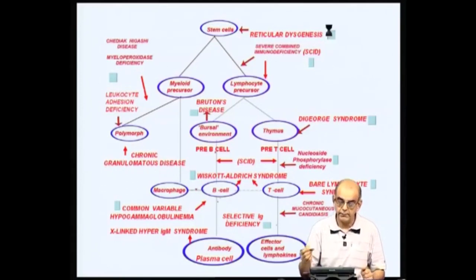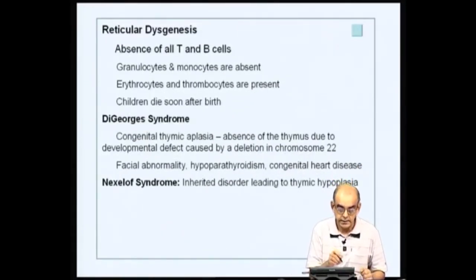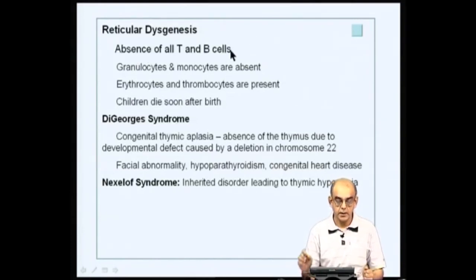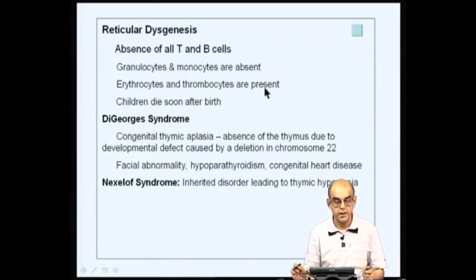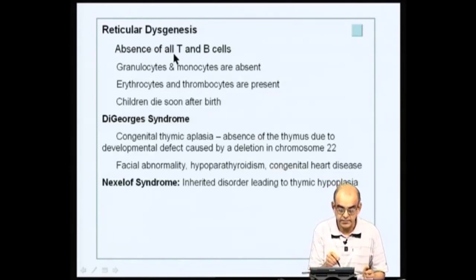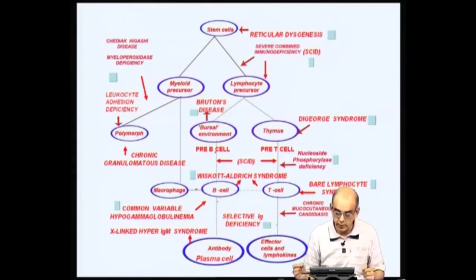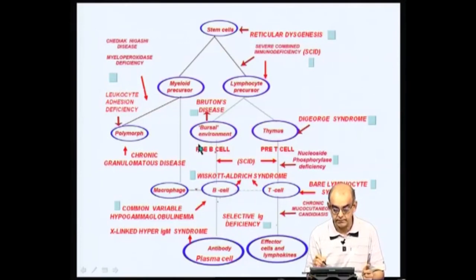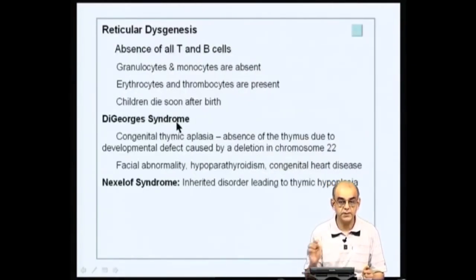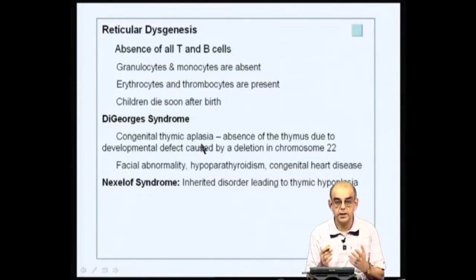Going back to this diagram, you also have diseases affecting primary lymphoid organs like the thymus and the bursa, or the synthesis of pre-B cells and pre-T cells. If you look at the thymus, there is a deficiency called DiGeorge syndrome — a congenital thymic aplasia, meaning the thymus is not fully functional. It is due to a developmental defect caused by a deletion in chromosome 22, and these patients have facial abnormalities, hypoparathyroidism, and congenital heart disease.